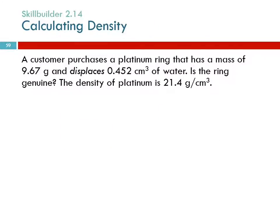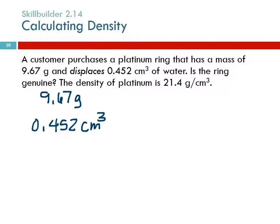Let's do this one: a customer purchases a platinum ring that has a mass of 9.67 grams and displaces 0.542 cubic centimeters of water. Is the ring genuine? The density of platinum is 21.4 grams per cubic centimeter. The density of an object is a fundamental property of that material, so it can actually be used to identify the substance.